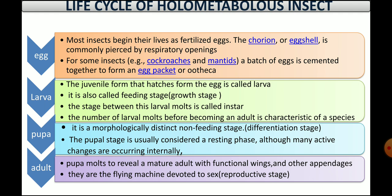Here we can see the peculiarities of different stages in the life cycle of a holometabolous insect. First is the egg. Most insects begin their life cycle as a fertilized egg. In some insects like cockroaches, a batch of eggs is cemented together to form a packet-like structure called an ootheca. These fertilized eggs also have respiratory openings.